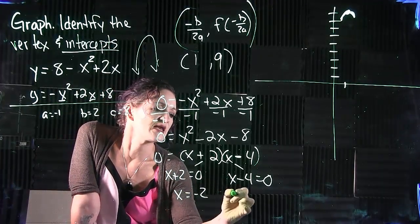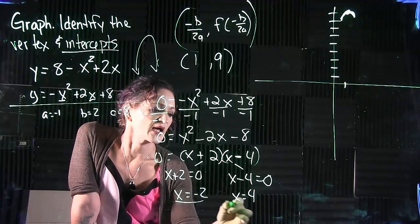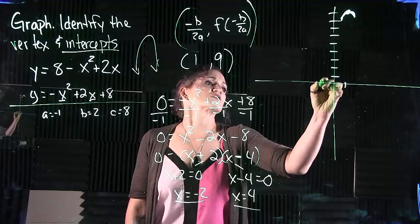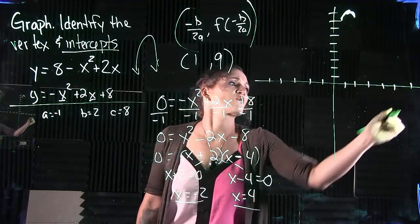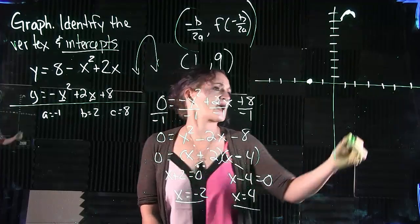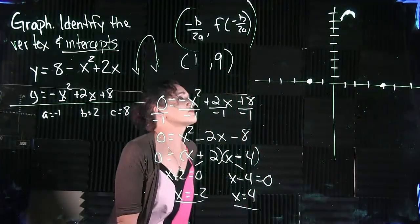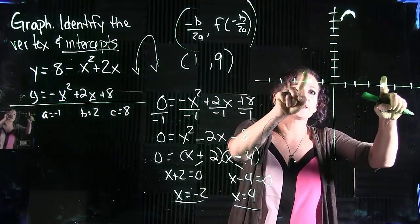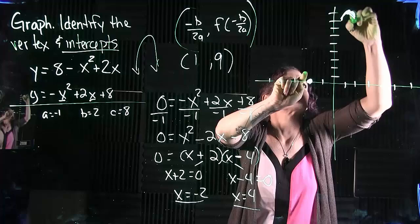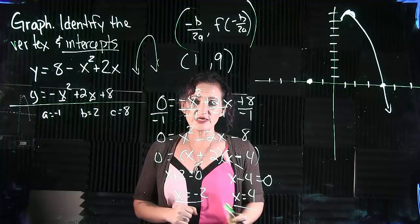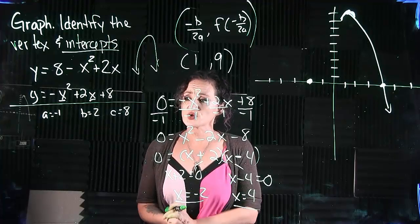Zero factor property tells us to split these factors up, set them each equal to 0 and solve. So we know that x is negative 2 and x equals 4. Those represent our x-intercepts, which means over here on our graph we can go ahead and put those points. We know we have intercepts at negative 2 and a positive 4. So this graph is going to go and it's going to connect to these two points here. Let's go ahead and find that y-intercept first and then we'll be done with this graph.